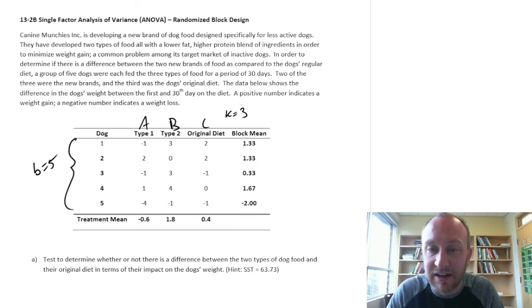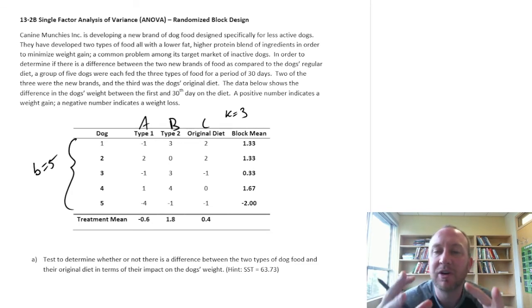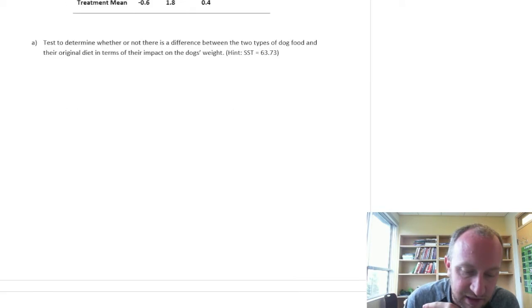So I guess dogs are different by breed. They're different by size. Their metabolism is different. So we want to take into account those differences and account for it in our calculations. So we are going to go through and complete our ANOVA here.